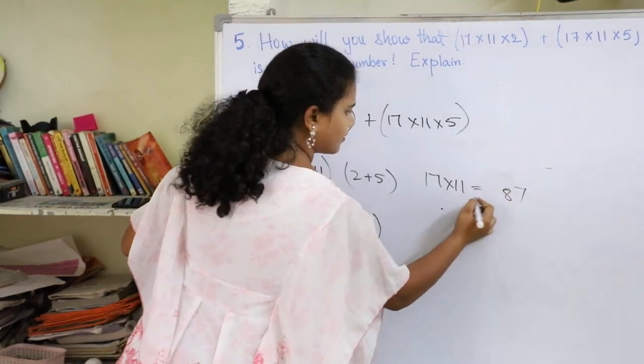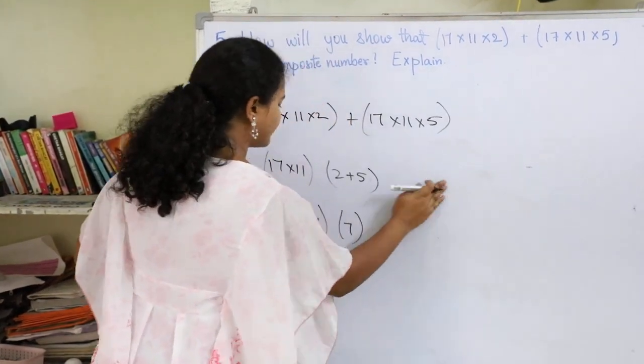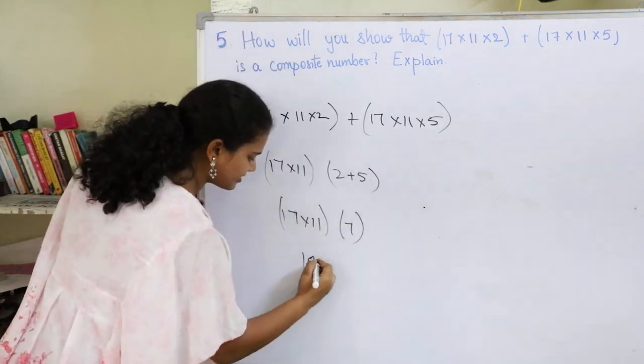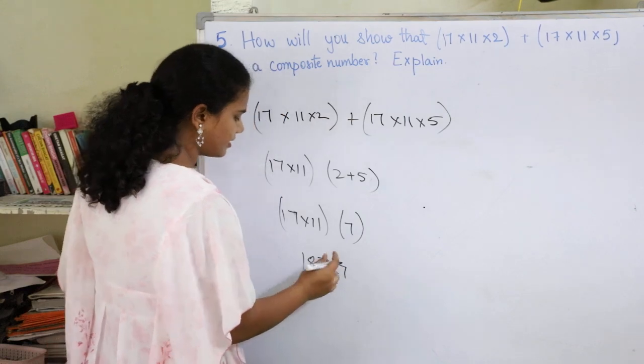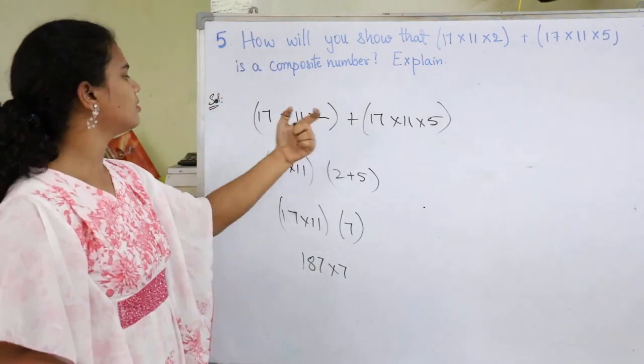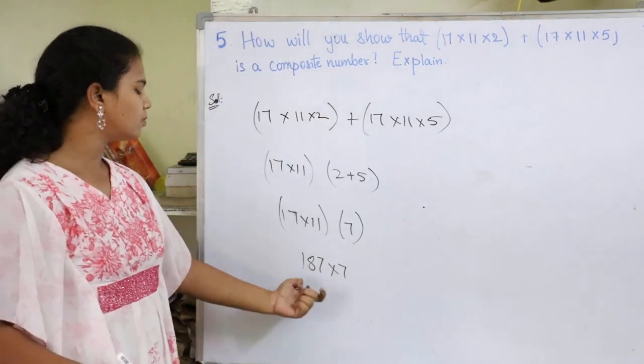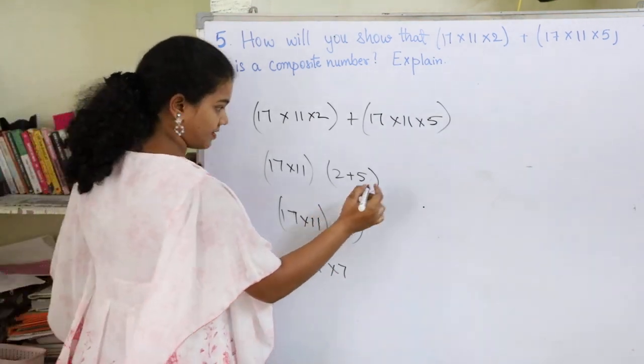Now to find this I can write 7 here. 7 plus 7 is 14, plus 8 is 22, plus 1. I got 187. So 187 into 7. By solving this whole question, I got 187 into 7. Now let's solve 187 into 7.